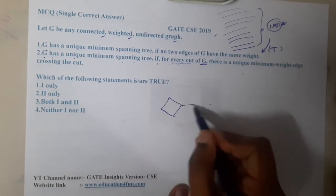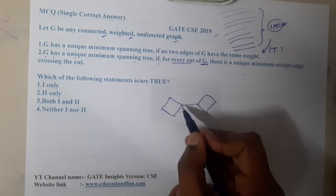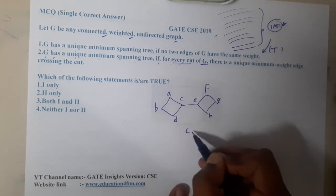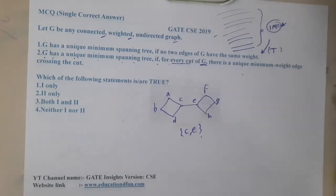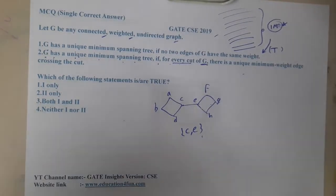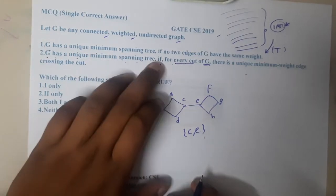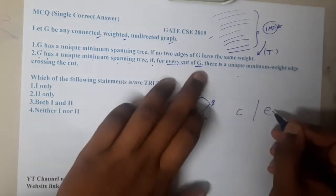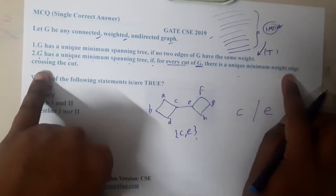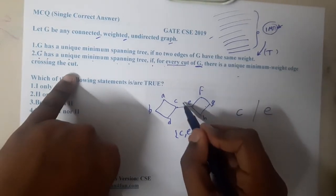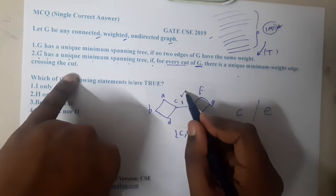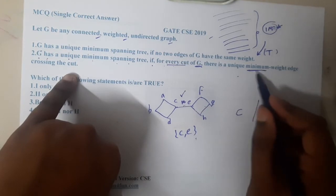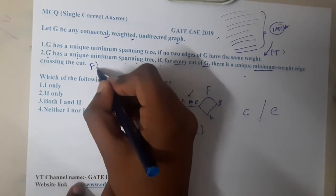Let us take a bridge example. If you take vertices A, B, C, D, E, F, G, H — if you remove C or E, any one of them, you are going to disconnect the graph. So C has an individual cut set and E also has one. There is a unique minimum weighted edge crossing the cut. If this edge is having the minimum value it will be taken, but even if it is having the maximum value it will also be taken. So minimum or maximum, we will not consider that — option B should be wrong.